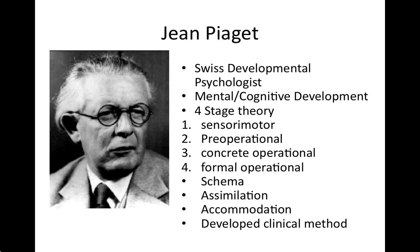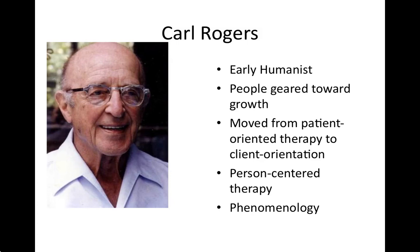Jean Piaget was a Swiss developmental psychologist focused on mental and cognitive development. He had a four-stage theory — the sensorimotor stage, the pre-operational stage, concrete operations, and formal operations. Key terms associated with his work include schema, assimilation, and accommodation. He also developed the clinical method of research.